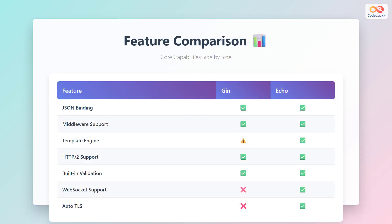Let's examine the feature sets of both frameworks. Both JIN and ECHO provide excellent JSON binding functionality, allowing you to easily parse request bodies into Go structs with automatic validation. Middleware support is robust in both frameworks, enabling you to implement cross-cutting concerns like authentication, logging, and request processing. However, there are some key differences to note.